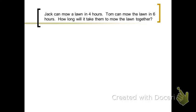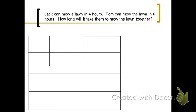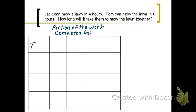Well we can use a chart to organize ourselves in this problem and set it up because we need to come up with an equation. So I'd like you to draw a chart like the one I just drew here. At the top you want to write portion of the work completed by, and then your headings are time, Jack, Tom, and together.